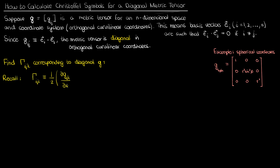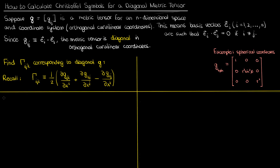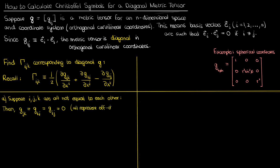Recall that the first kind Christoffel symbols are given by this formula, where x super i, x super j, and x super k represent individual coordinates in the coordinate system, from x super 1 all the way to x super n. We'll work through this in parts because there isn't a single general formula for all possible index combinations. We start with the case where the i, j, k indices are all different. Since these indices are all different, G sub jk, G sub ki, and G sub ij are all 0 — they represent off-diagonal metric tensor components. We can conclude that the first kind Christoffel symbol G sub ijk is 0 when i, j, and k are all different. I'll call this equation 1a.